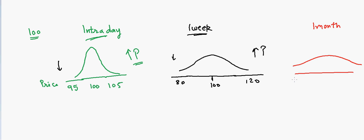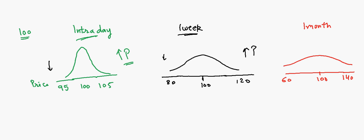Over one month, the range might stretch from $60 to $140, still centered around $100 but now flattening out considerably. This isn't a super complicated concept, but it always gives you more clarity when you understand why certain things are happening.